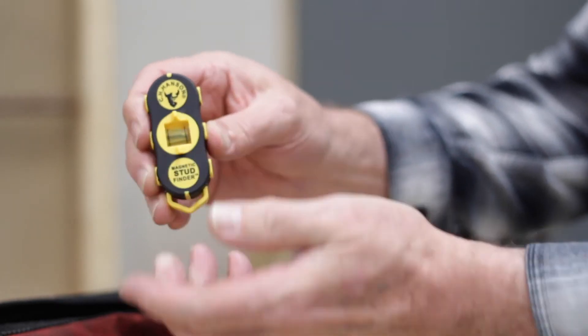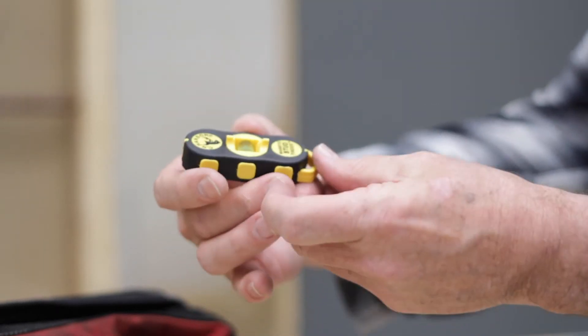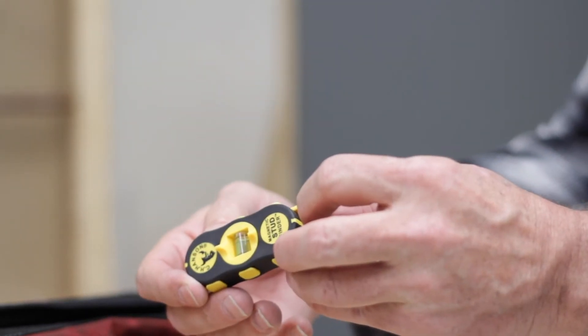The stud finder features a rotating bubble vial in durable rubber encased construction for long life.